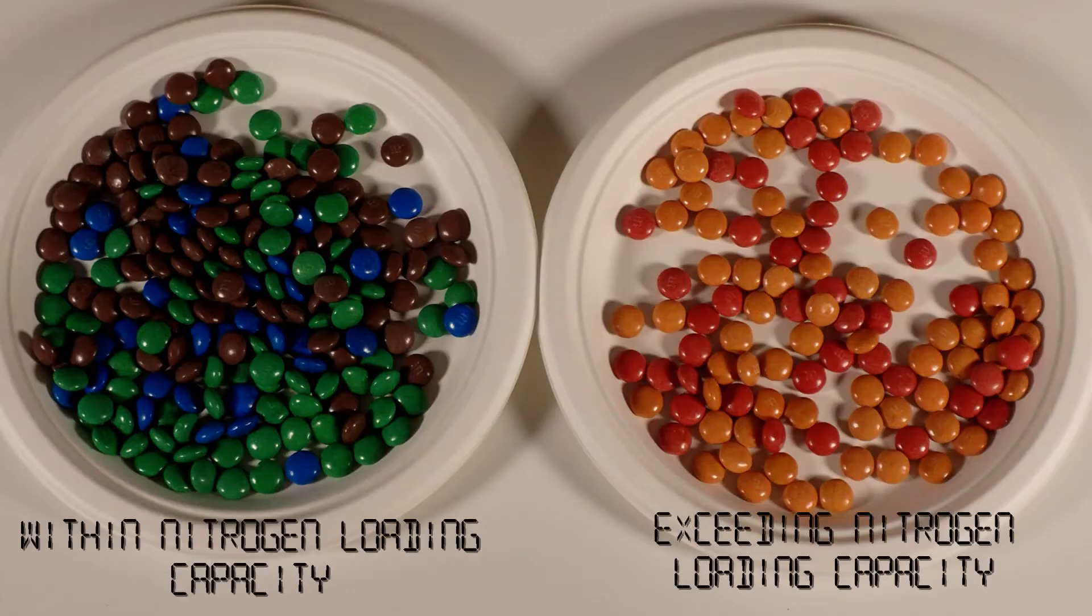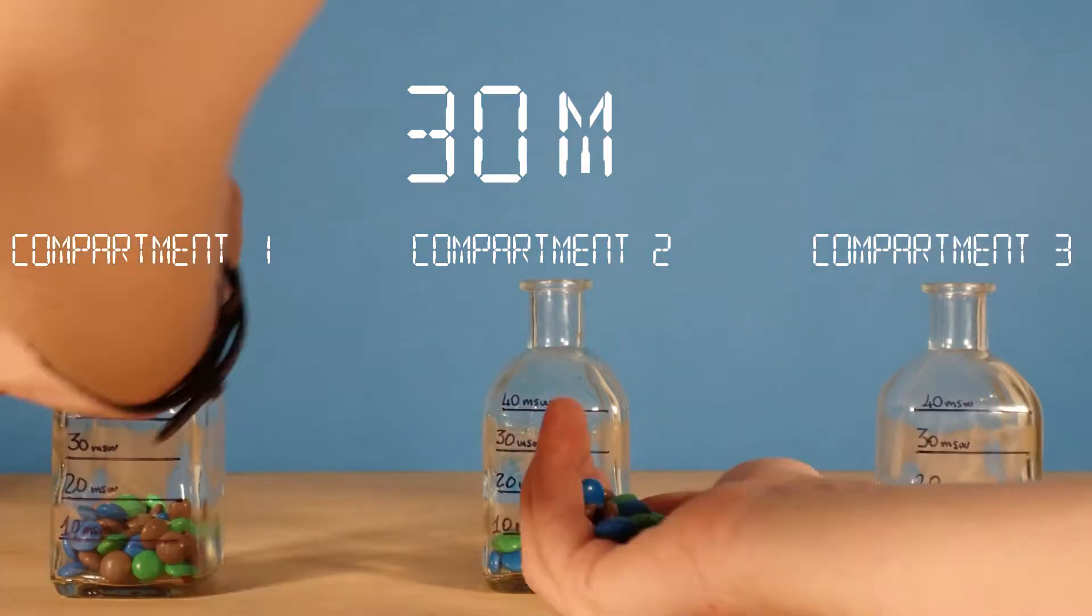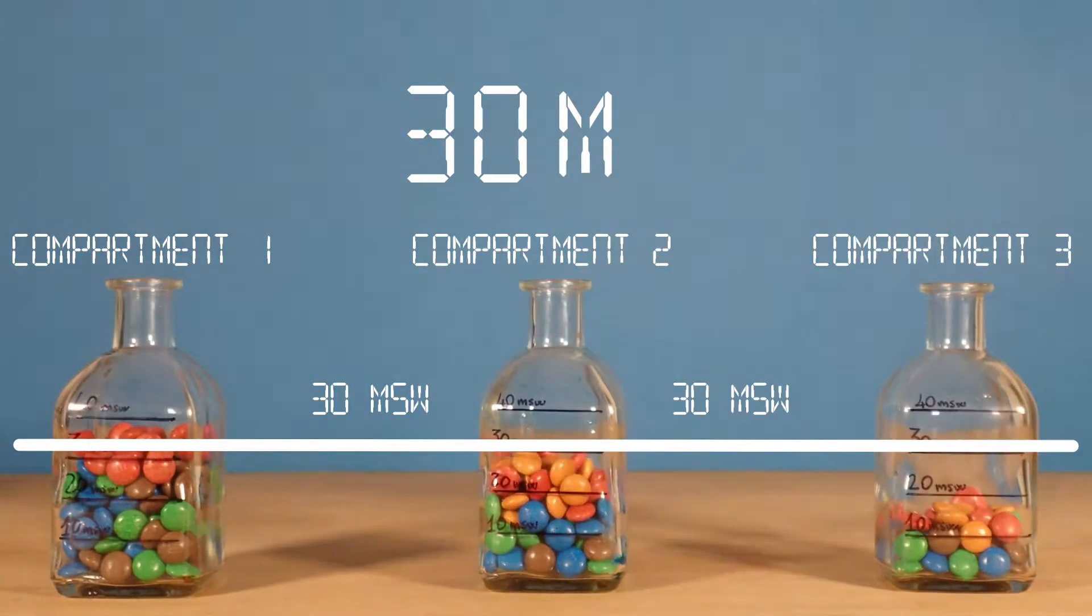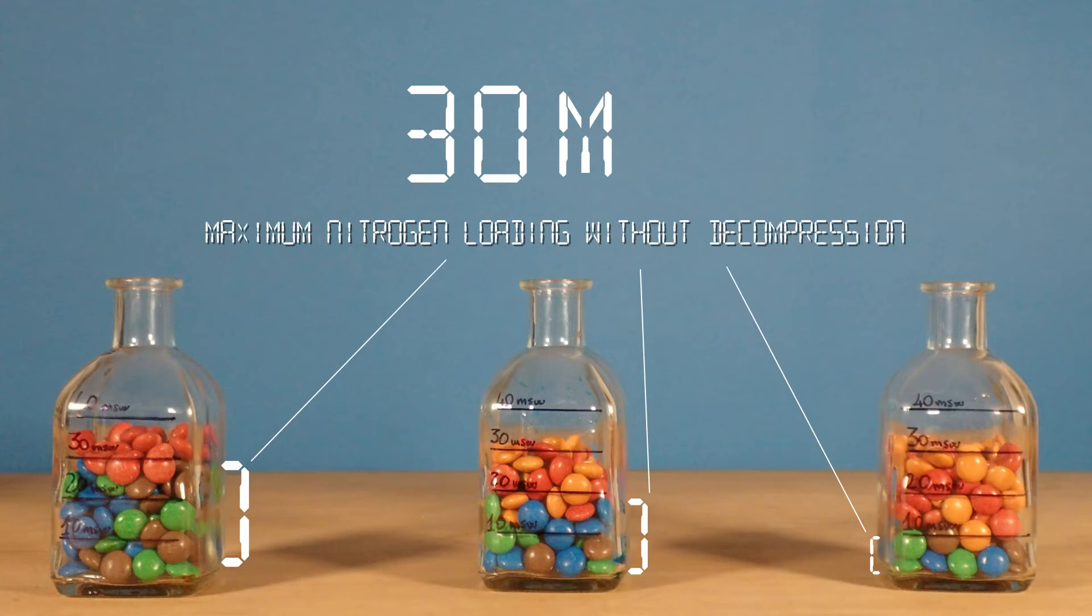All neo-Haldanean models work around the idea of compartments. To put it simply, compartments are theoretical constructs created to account for the fact that different body tissues take up nitrogen at different rates and have different nitrogen loading capacities. All compartments in a model therefore have different rates of nitrogen uptake and can tolerate a different load of nitrogen before requiring decompression.